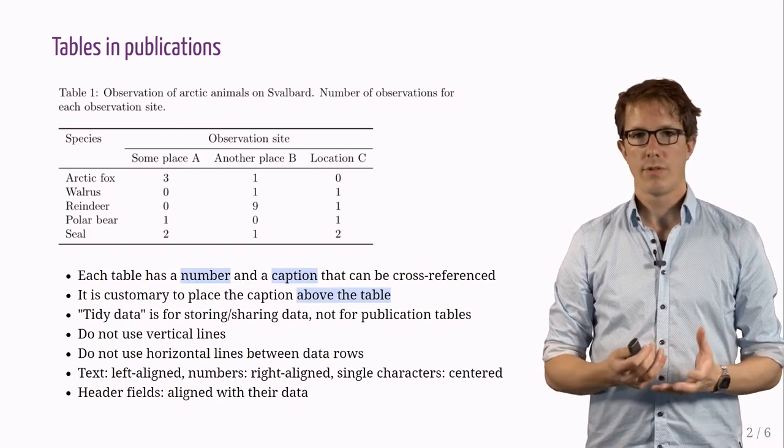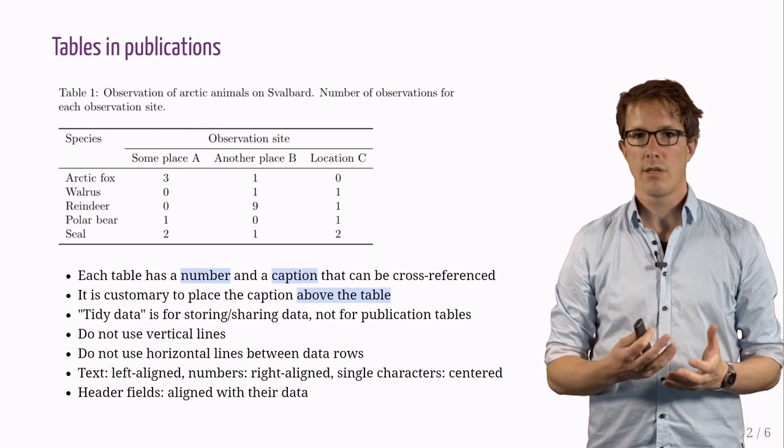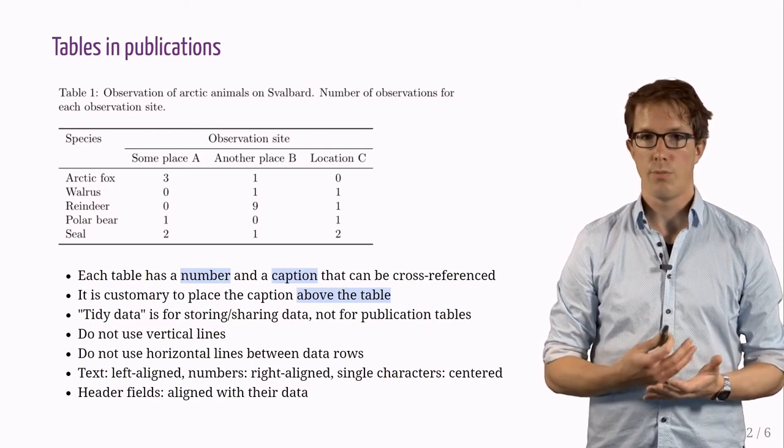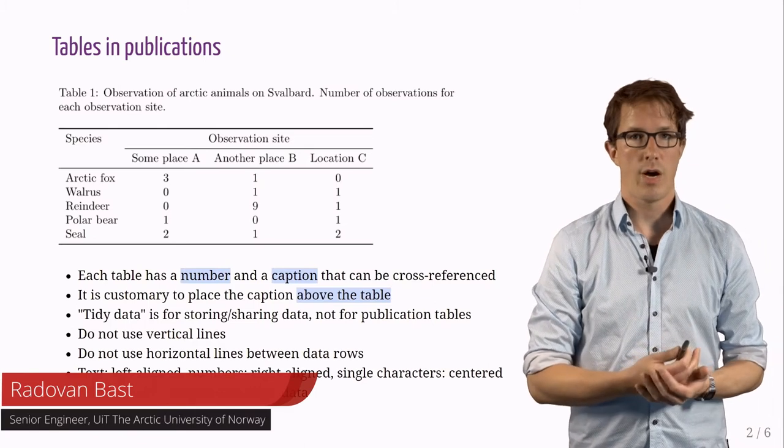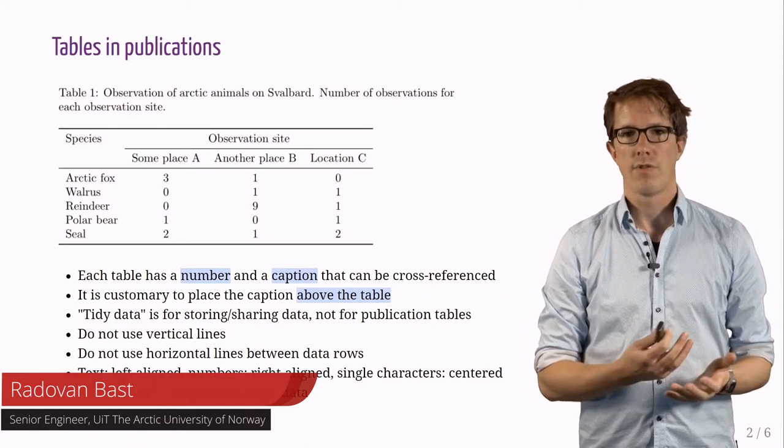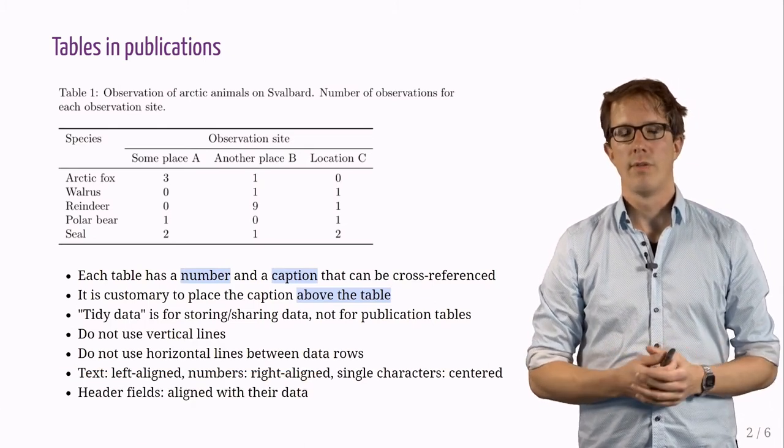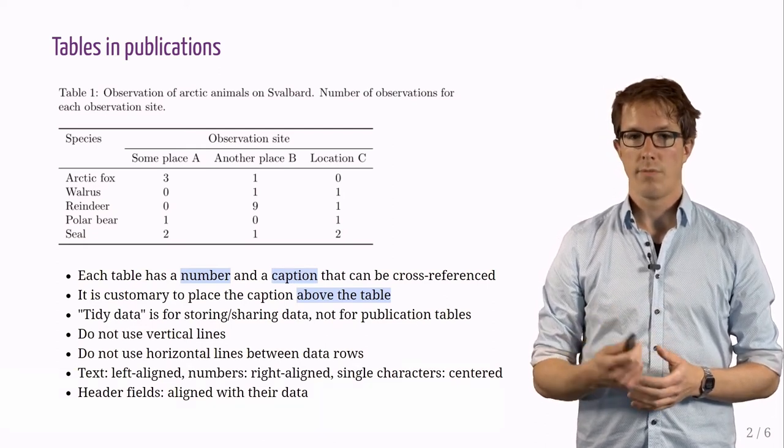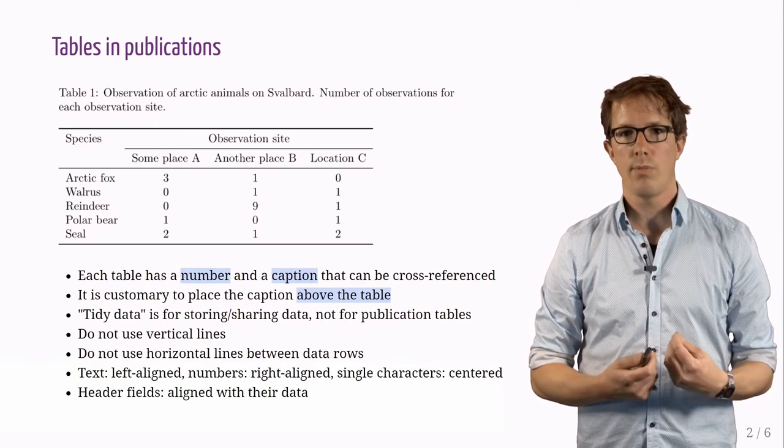This table on the left hand side shows our fantasy dataset, which we have discussed in the video about data formats. It reports observations of Arctic animals on Svalbard. It is just an example. But notice that the table has a number and has a caption. This is important so that the table can be cross-referenced.